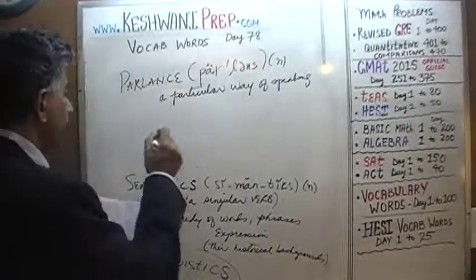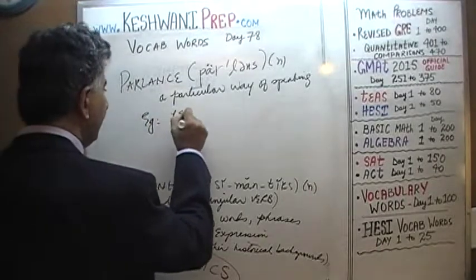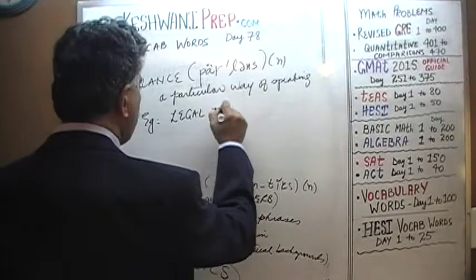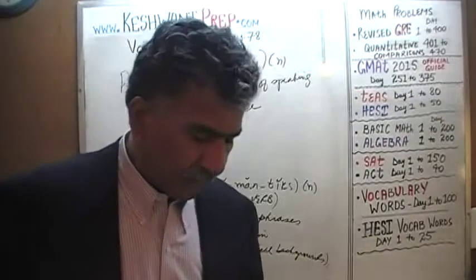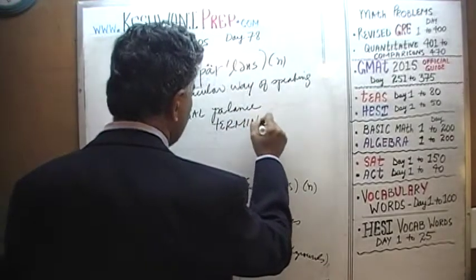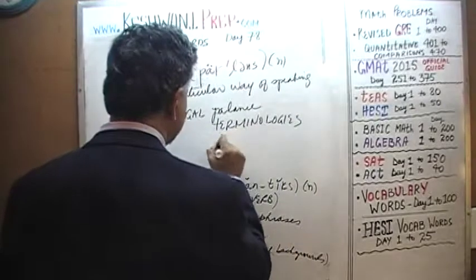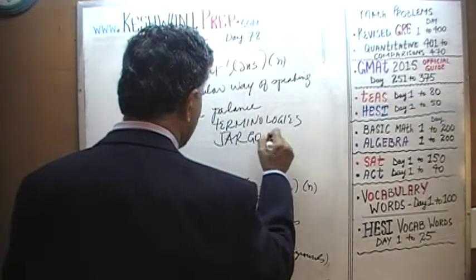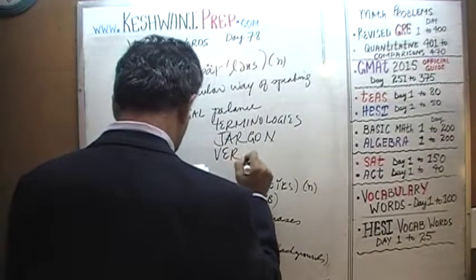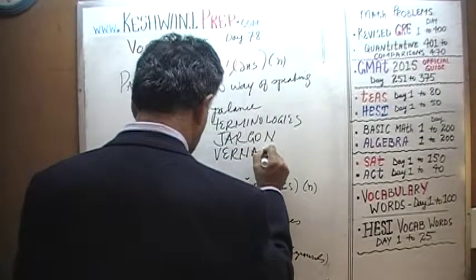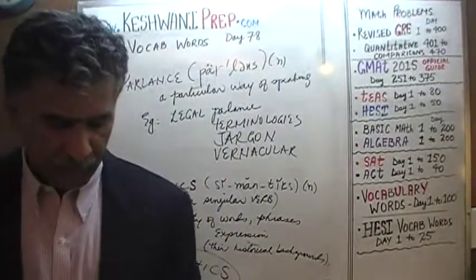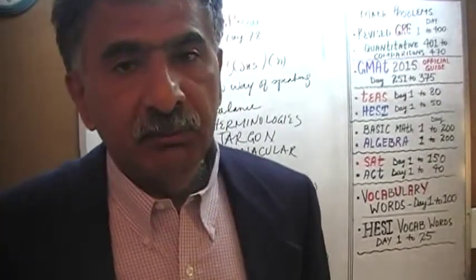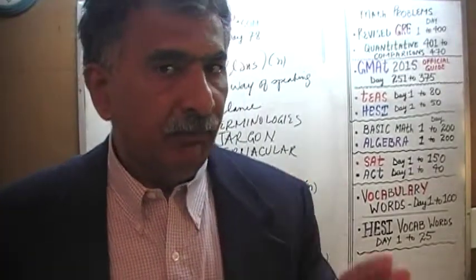Parlance can also be used very loosely. For example, one might speak of legal parlance. When we use the term in that sense — legal parlance — we're talking about legal terminologies, legal jargon, legal vernacular. Vernacular, parlance, and jargon all mean a particular way of speaking in a given field or discipline.